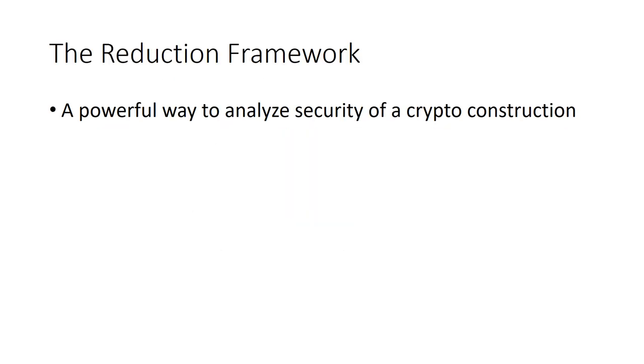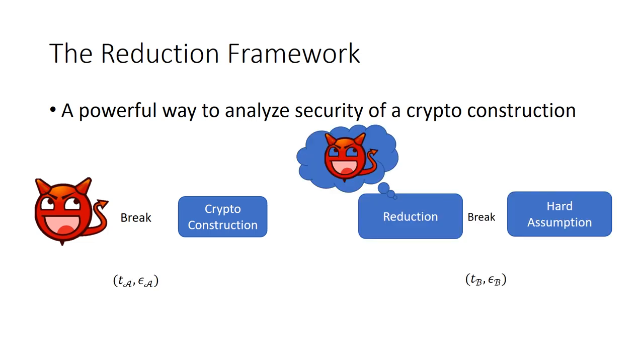The Reduction Framework is a powerful tool to analyze security of a crypto construction by relating its security to some suitable hard problem. Assume there exists a T_A, epsilon_A adversary A that breaks the crypto construction. Then we can construct a T_B, epsilon_B reduction algorithm that uses A as subroutine and solves the underlying hard problem.